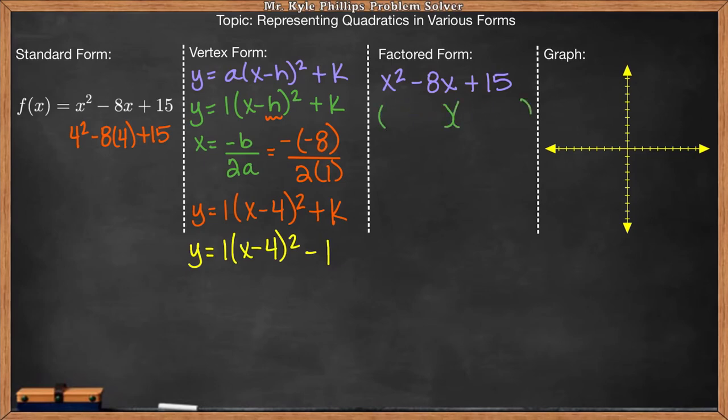So when I factor, I have two sets of parentheses. And now I look at the first term and I say, okay, what two terms could I multiply together and get x squared? And that would be x times x will give you x squared. And now I look at the last number, positive 15. So I need to think, okay, I need two numbers that when I multiply them together, I get positive 15, and when I add them together, I will get negative 8.